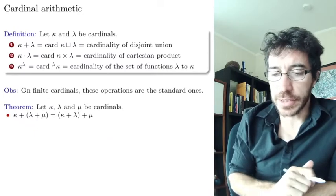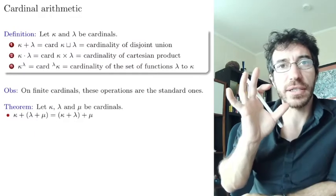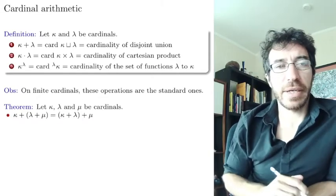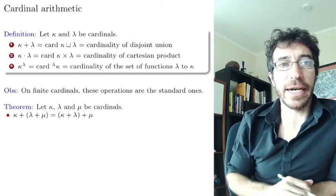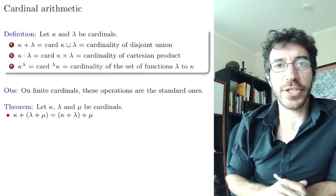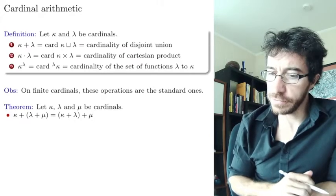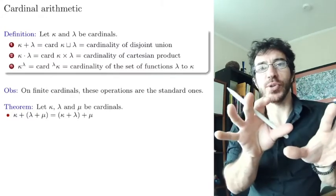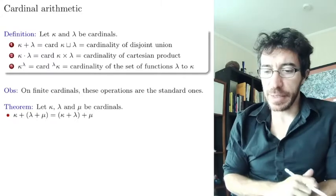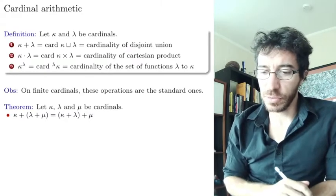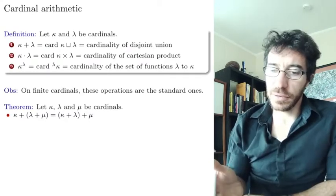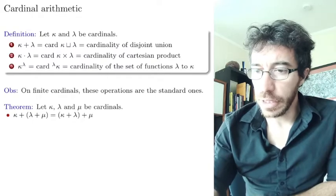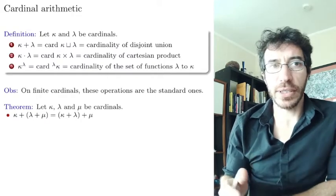It's actually quite surprising that these operations on infinite sets have almost the same properties as the operations on natural numbers — not all the same, but many of them. For instance, the addition operation is associative — it doesn't matter which two you add first. To show that, let me just do one of the cases since they're all very similar. You need to show that there's a bijection between the sets.